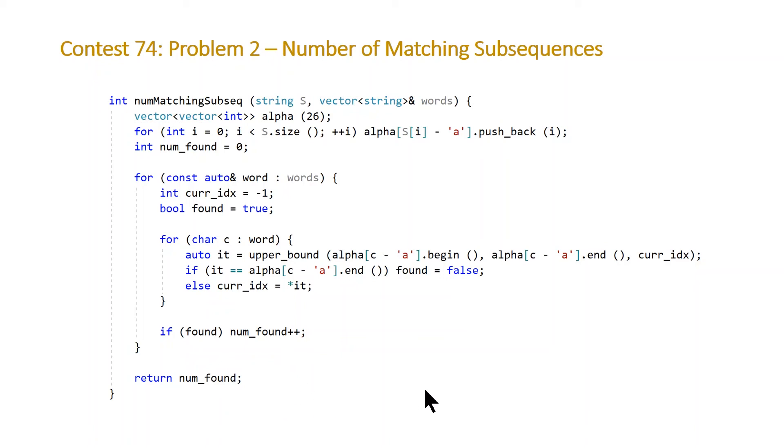And note that there's a small optimization we could do here. Whenever we are setting found equal to false, we could also break out of this loop, but that's not going to change the complexity of our algorithm. And so the complexity of this algorithm is going to be O of A times B times log C. So A is our number of words, B is the maximum length of each word, and C is the length of our string s.